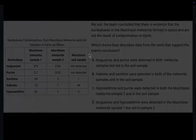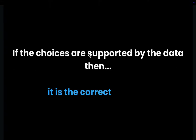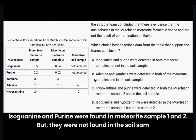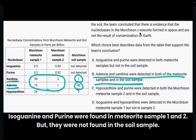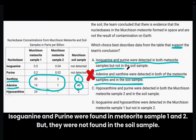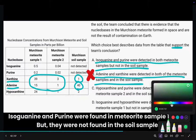A common mistake on harder graphical questions: students think that if a choice is supported by the data, it's obviously correct. But you also have to check if it's supported by the conclusion. For example, choice B says adenine and xanthine were detected in both meteorite samples and in the soil samples. However, this weakens the conclusion — the question asks for a choice that supports the conclusion, not weakens it. Choice A says isoguanine and purine were detected in both meteorite samples but not in the soil sample. That is supported by the table and exactly matches our prediction. So choice A is correct.